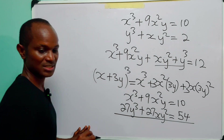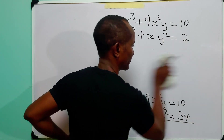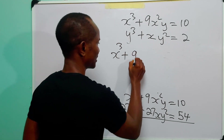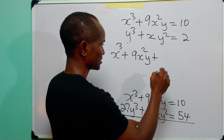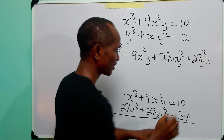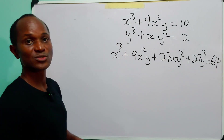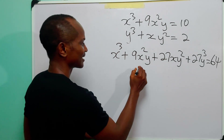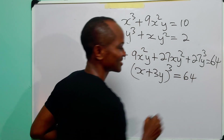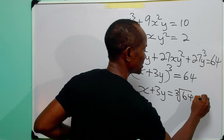Adding these two equations gives x³ + 9x²y + 27xy² + 27y³ = 64. This can be compressed as (x + 3y)³ = 64, so x + 3y = the cube root of 64, which equals 4.